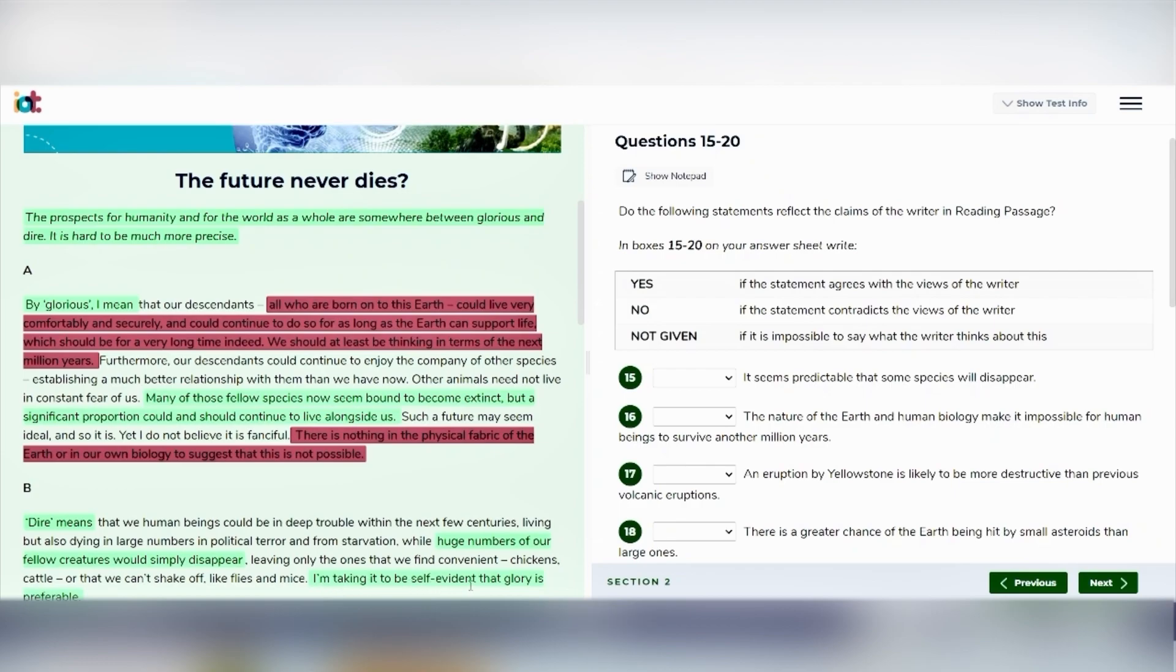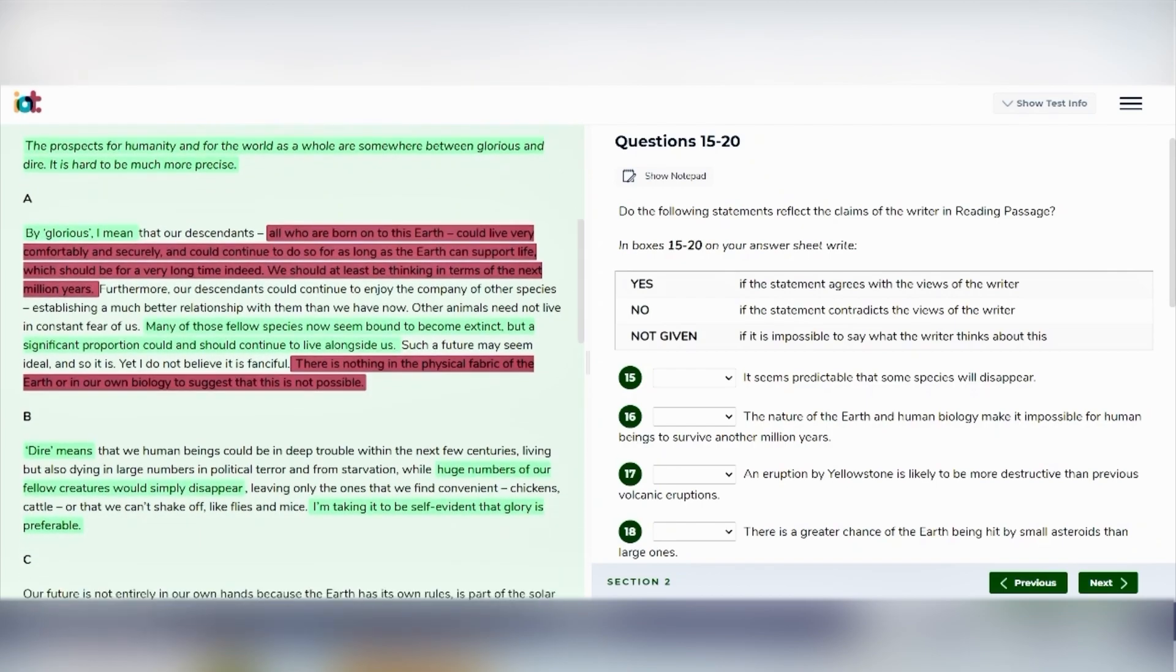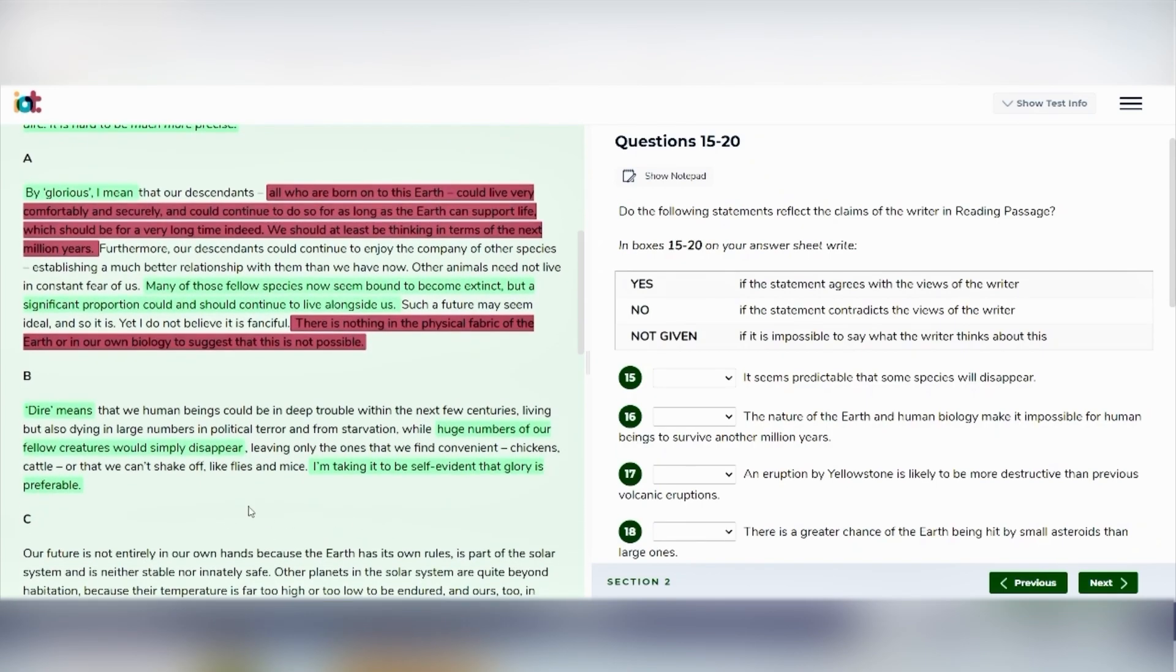We will read the last line of paragraph B. It says that I am taking it to be self-evident that glorious is preferable. The writer here explains that he prefers the glorious point of view. So we will neglect the dire point of view and we'll move to paragraph A where he is explaining what he means by glorious. And it says that some of the species will become extinct and a significant proportion will live. Now we'll move back to the question where it says that it seems predictable that some species will disappear. So it's a 100% match and we can easily decide that it is a yes statement.